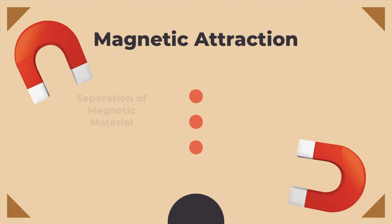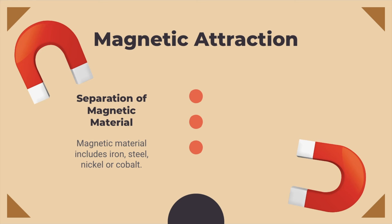Magnetic attraction is the separation of magnetic material from non-magnetic material. Magnetic material includes iron, steel, nickel, or cobalt. An example of this would be separating iron filings from sand.